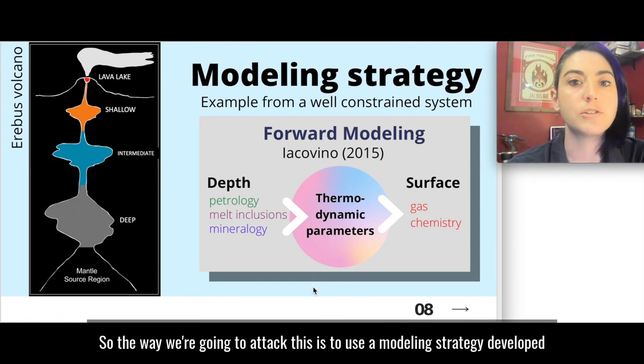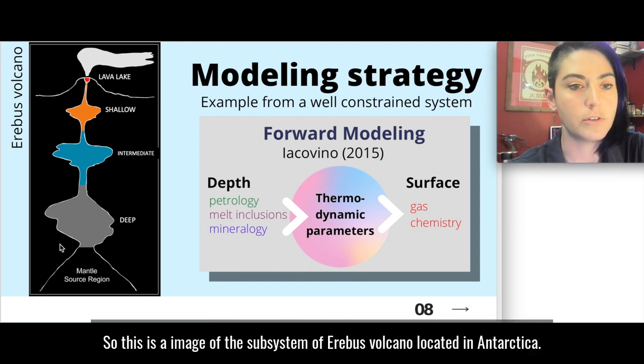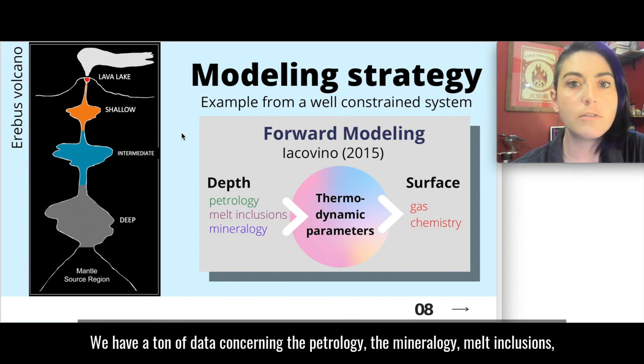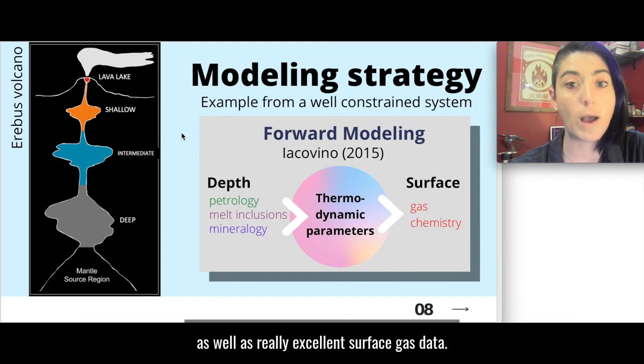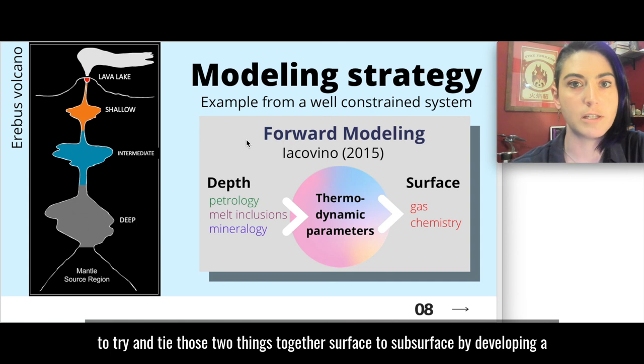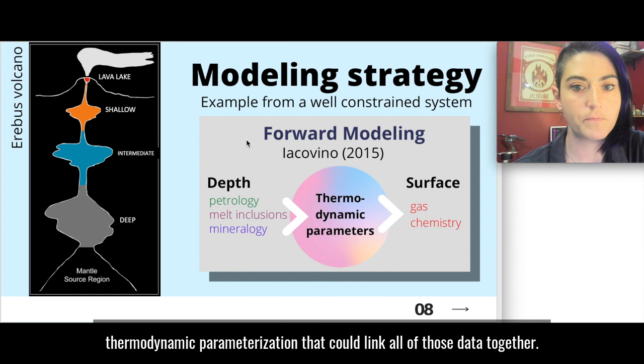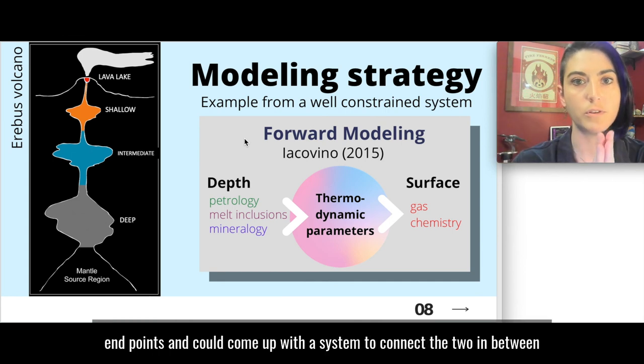So the way we're going to attack this is to use a modeling strategy developed for a very well constrained system. So this is an image of the subsystem of Erebus volcano located in Antarctica. We have a ton of data concerning the petrology, the mineralogy, melt inclusions, all these things that give us information about the depth of the volcano as well as really excellent surface gas data. So in 2015 a model was developed to try and tie those two things together surface to subsurface by developing a thermodynamic parameterization that could link all of those data together. And so this was shown to work well for Erebus where we have these well constrained endpoints and we could come up with a system to connect the two in between.